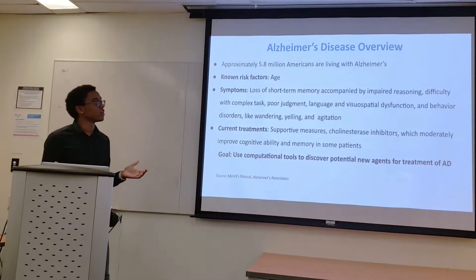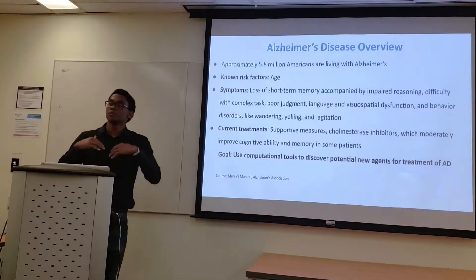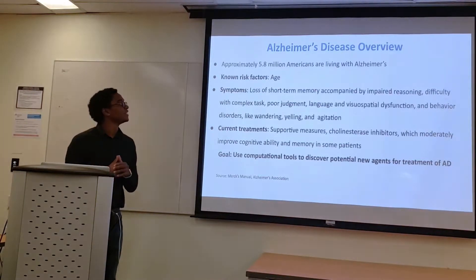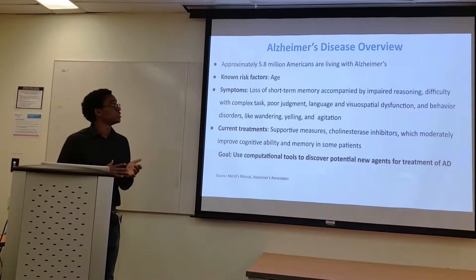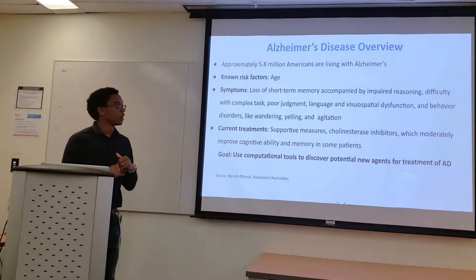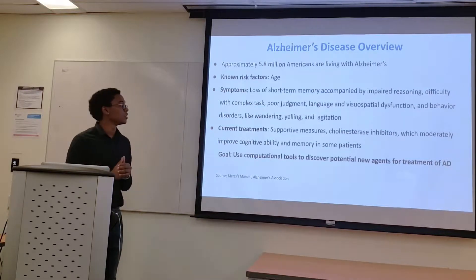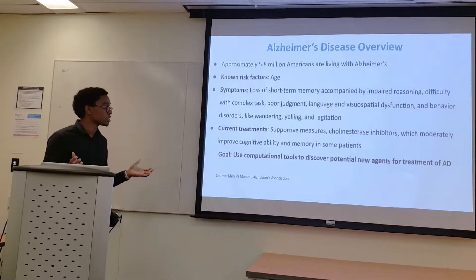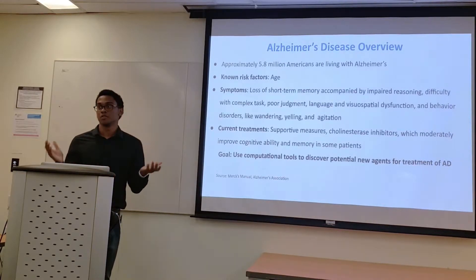About 5.8 million Americans are living with the disease. The only known risk factor is age, with people 65 years or older being the particular risk group. Symptoms include loss of short-term memory, behavioral disorders such as wandering, yelling, and agitation, poor judgment, and loss of cognitive ability and function. Current treatments are mostly supportive, with nurses, home aides, and family members being the support group for the patient. There are cholinesterase inhibitors, which only moderately improve cognitive ability and memory function. My goal in this project is to use computational tools to develop and discover new potential agents for the treatment of Alzheimer's.